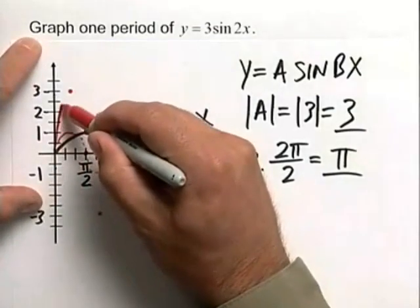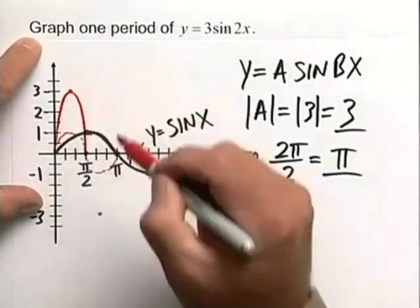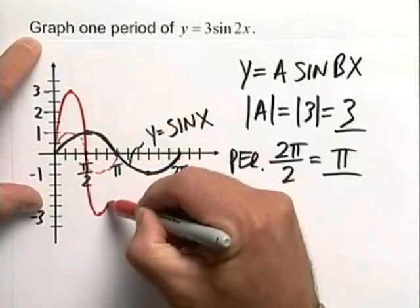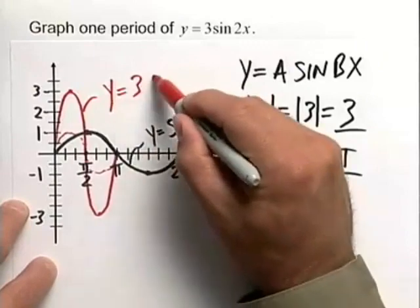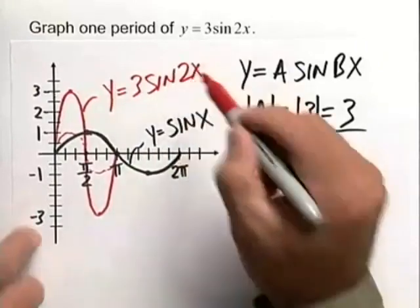So here's our final graph. You can see that that amplitude is 3, and that it has a period of π radians. So our red graph here is y equals 3 times the sine of 2x.